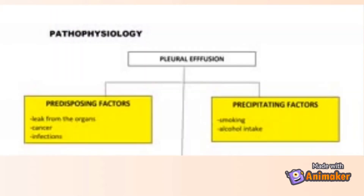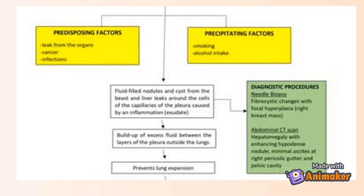What happens with pleural effusion? Predisposing factors include leaks from organs, cancer, and infections. Precipitating factors include smoking and alcohol intake. Pleural effusion occurs because fluid-filled nodules and cysts from the breast and liver leak around the cells of the capillaries of the pleura, caused by inflammation or exudate. Diagnostic procedures include needle biopsy — showing fibrocystic changes with focal hyperplasia in a patient with a right breast mass — and abdominal CT scan, showing hepatomegaly with enhancing hypodense nodule, as well as minimal ascites at the right pericolic gutter and pelvic cavity.